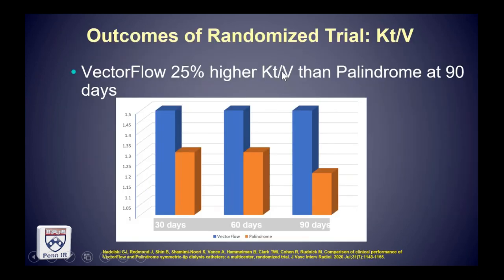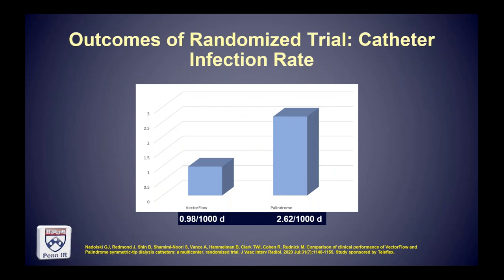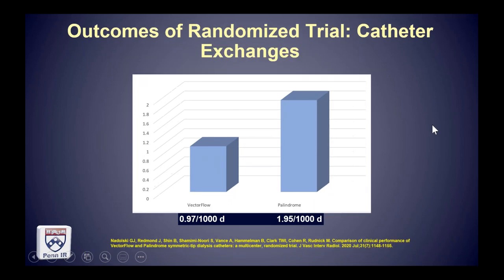This found that the critical parameter of KT over V — the efficiency of hemodialysis and an independent predictor of patient survival — was 25% higher than the palindrome at 90 days, the endpoint of the study. The catheter infection rate was more than double in the palindrome subjects, and the need for removing and exchanging the catheter due to poor flows was also nearly double in the comparison catheter.